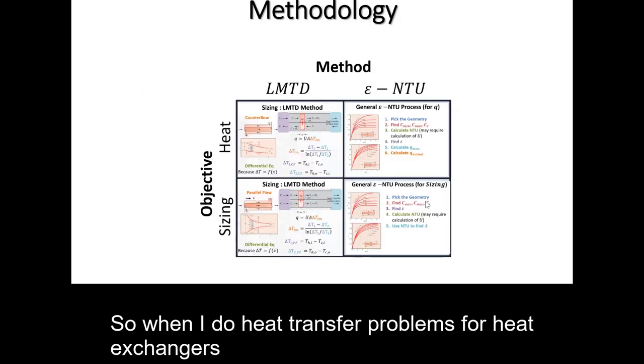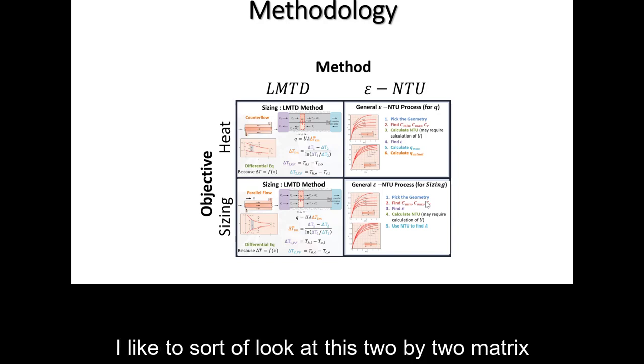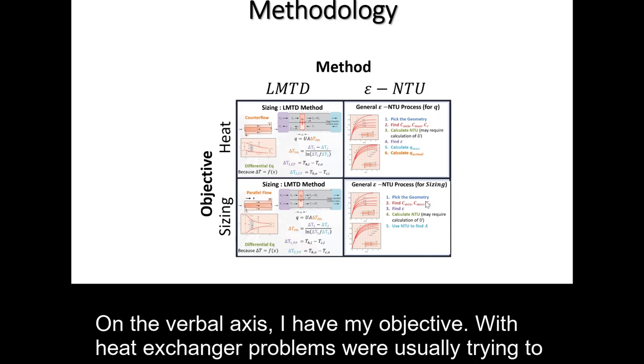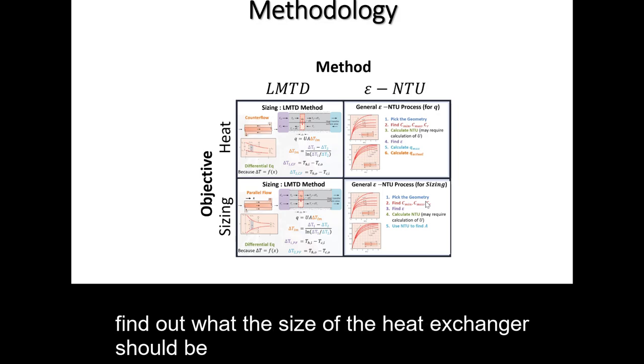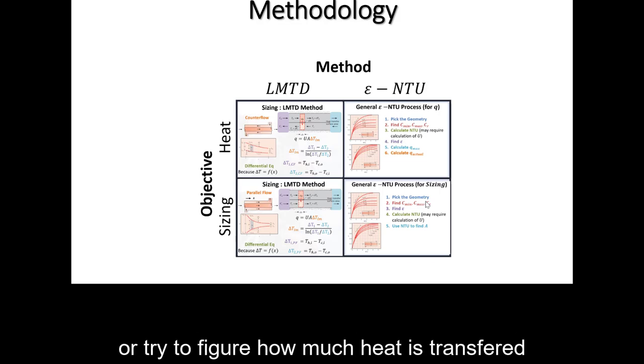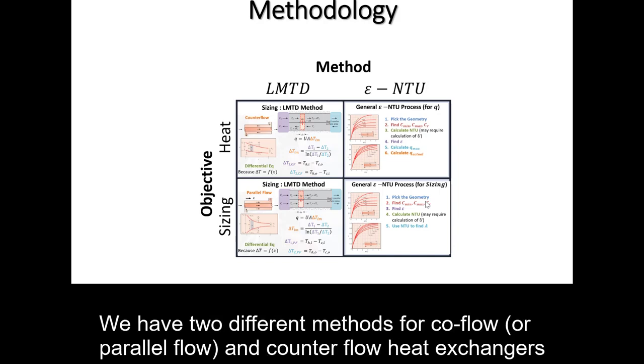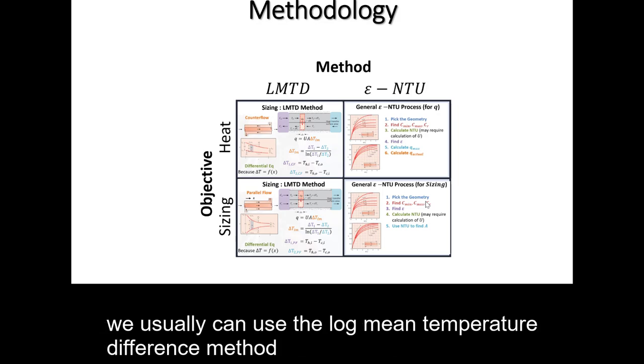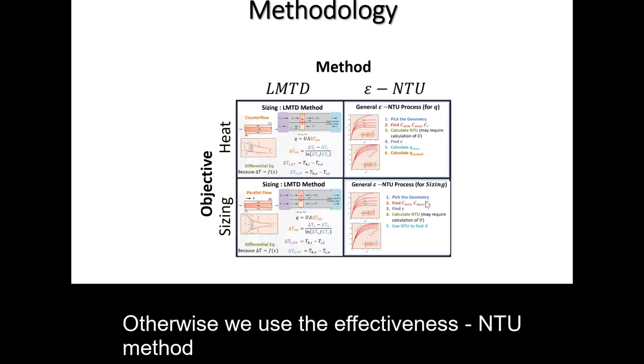So when I do heat transfer problems for heat exchangers, I like to sort of look at this 2x2 matrix. On the vertical axis, I have my objective. With heat exchanger problems, we're usually trying to find out what the size of the heat exchanger should be or trying to figure out how much heat is transferred. We have two different methods. For co-flow or parallel flow and counter flow heat exchangers, we usually can use the log mean temperature difference method. Otherwise, we use the effectiveness NTU method.